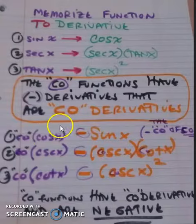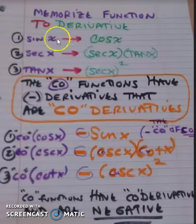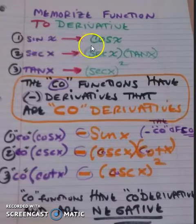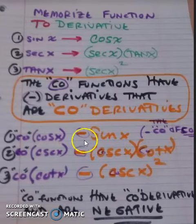Cosine's derivative is negative, but it's the co-function of sine's derivative. In other words, sine's derivative is cosine, cosine's derivative is sine but negative. All the co-functions have negative derivatives.